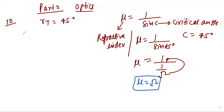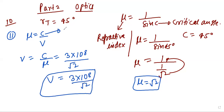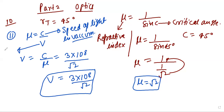Now see the next formula: mu = c/v, so v = c/mu. Here c is the speed of light, that is 3×10⁸, divided by mu which is √2. This gives the resultant velocity. c is your speed of light in vacuum, and v is the velocity of light in the medium. Please remember these two formulas — they are very important.